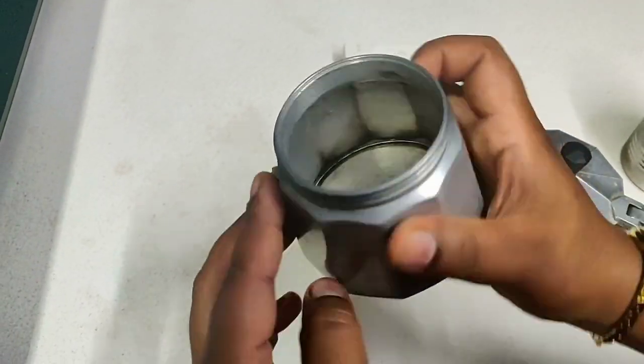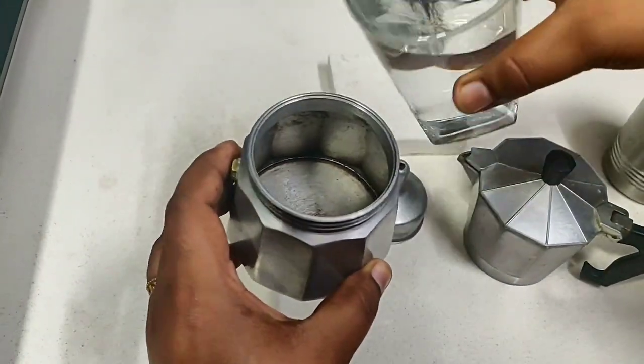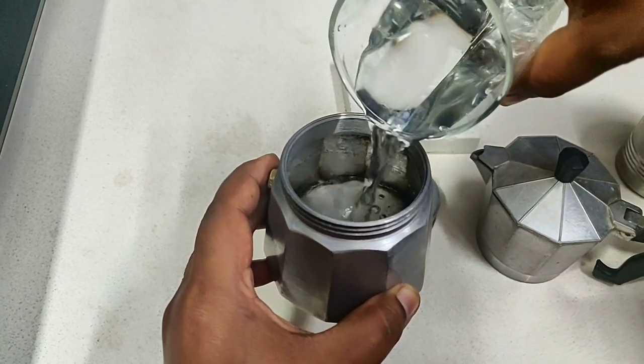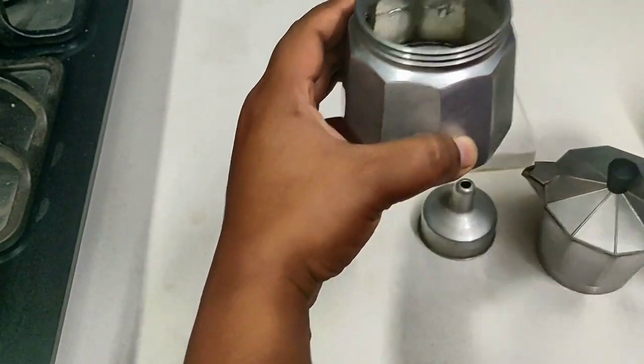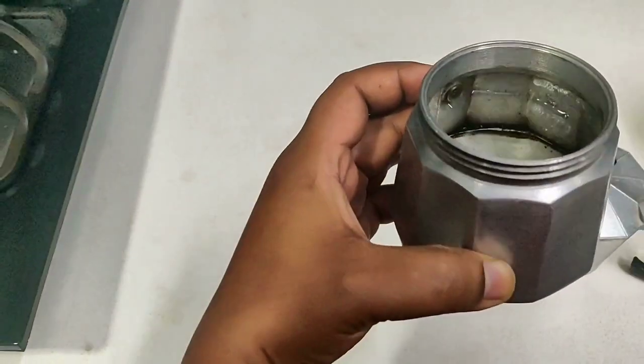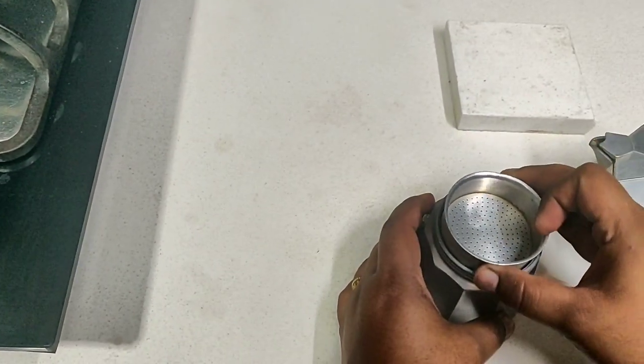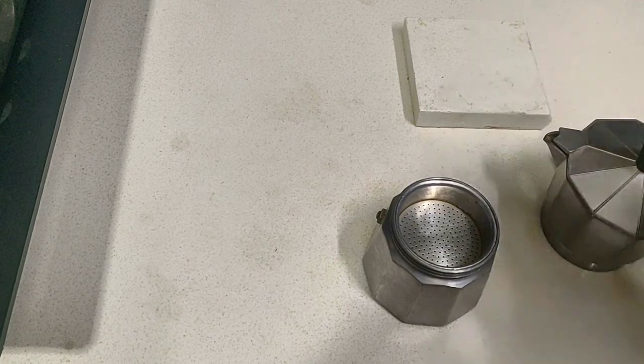It has a hole or an opening, so you should fill the water just below the opening. Please don't cover the opening—ensure the opening is not covered with water. And close the top part where we're going to put coffee powder.